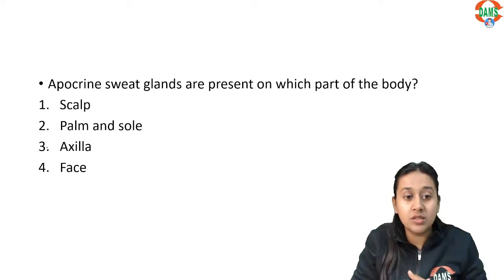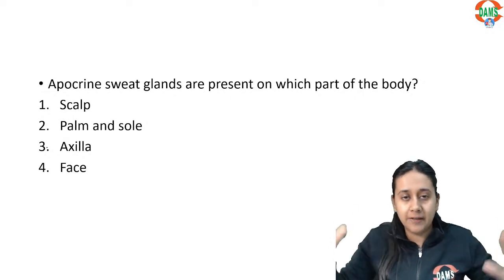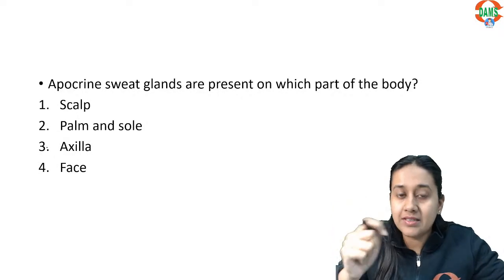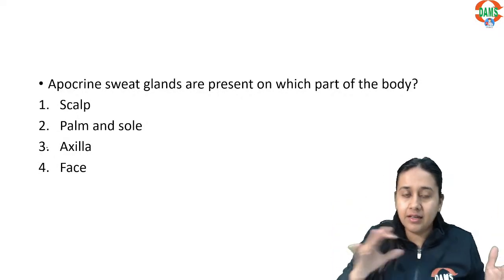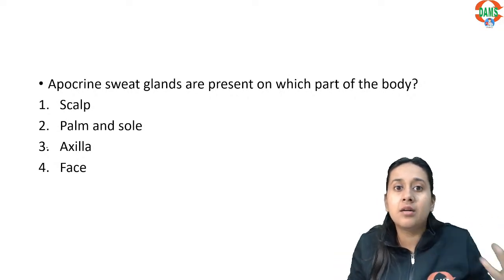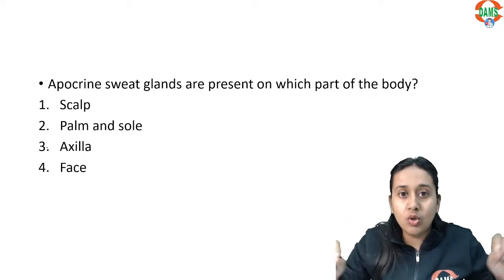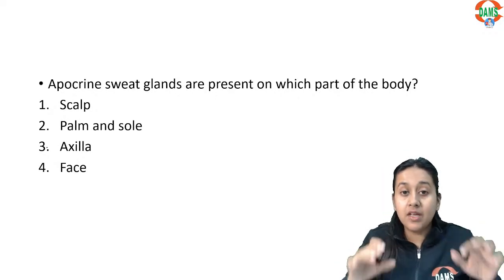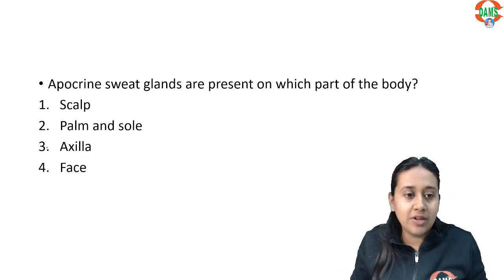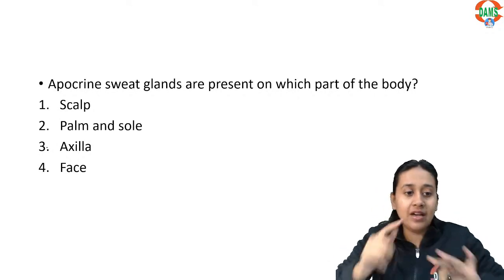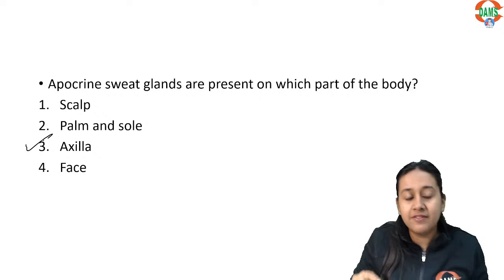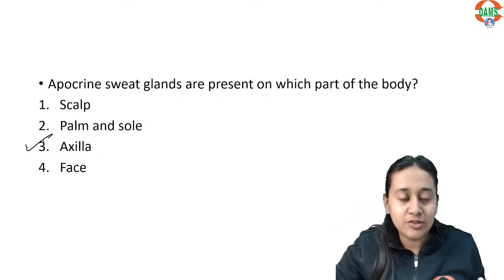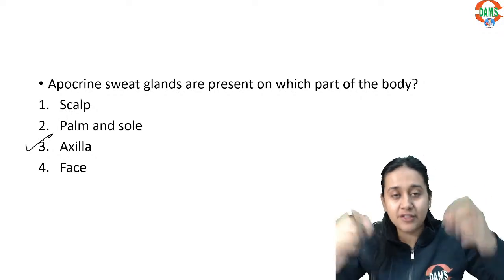The next question: eccrine sweat glands are present on which part of the body? There are two types of sweat glands — eccrine and apocrine. Eccrine glands are related to thermoregulation, present since birth, and found all over the body. Apocrine glands are related to olfactory communication and become functional only at puberty. The location of apocrine glands is restricted to three areas: axilla, areola, and groin. The best answer for the question is the axilla.